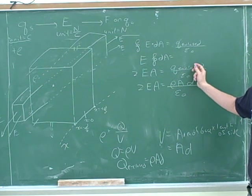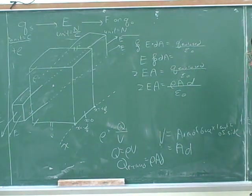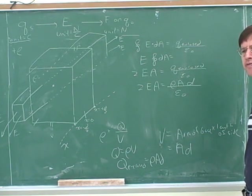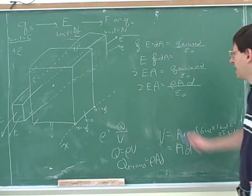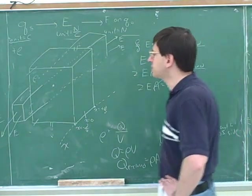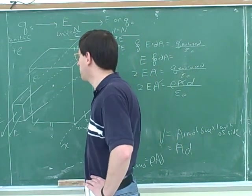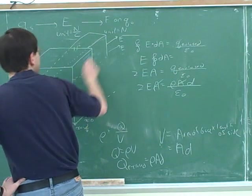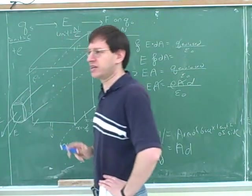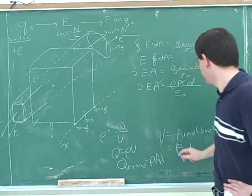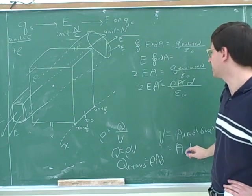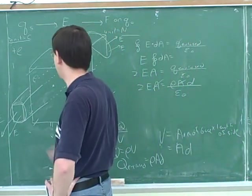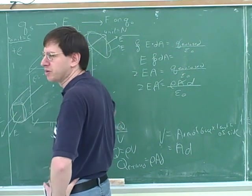So we can plug that in for the enclosed charge. Now there's one thing we could do right off the bat to simplify this formula — the A's cancel. And this is why it turns out it doesn't matter whether you're using a cylinder or a box. If I used a cylinder, it would have circular faces, but the volume of the cylinder would still be the area of the circular face times the distance, and those two areas are still going to cancel. So we can use either a cylinder perpendicular to the slab or a box.